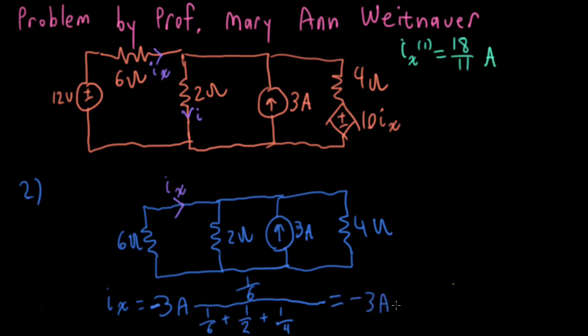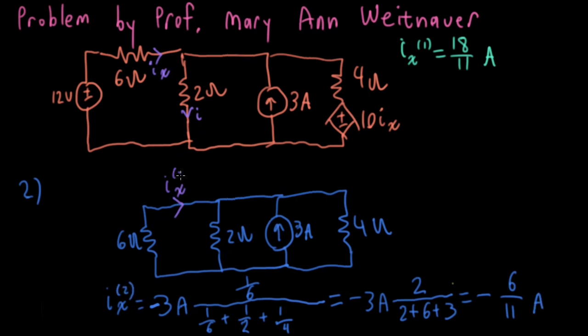Okay, so I have minus 3 amp. And let me multiply the numerator and the denominator by 12. So I'll have a 2, and then down here I'll have 2 plus 6 plus 3. So I have minus 6 over 11 amp. And once again, I'm going to put in some superscripts. Here I'm putting a superscript 2 on everything to remind myself that this is the particular contribution to the controlling current associated with this 3 amp source. And I'll write it up here. So I have IX2 equals minus 6 over 11 amp.